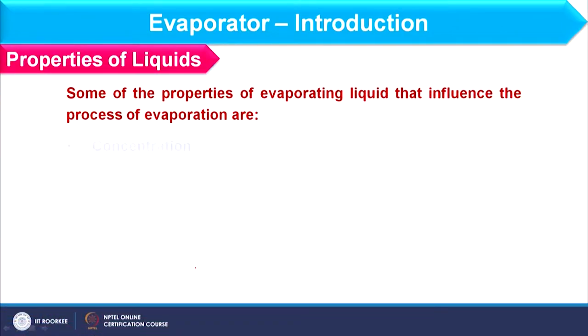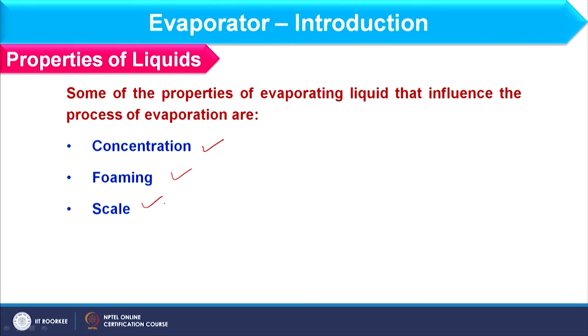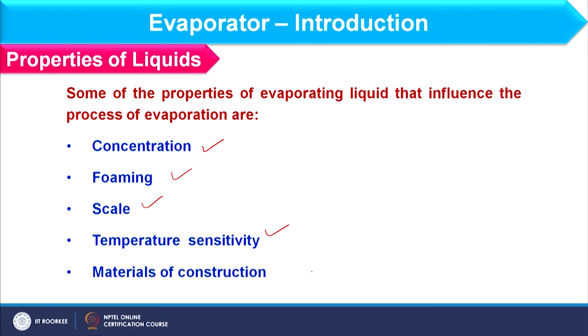Now we will discuss some properties of the liquid that are important for the evaporation process. These properties are: concentration of the liquor, foaming tendency, scale formation, temperature sensitivity of the material, and finally, material of construction. Based on all these parameters, we decide the suitable type of evaporator for a given application.